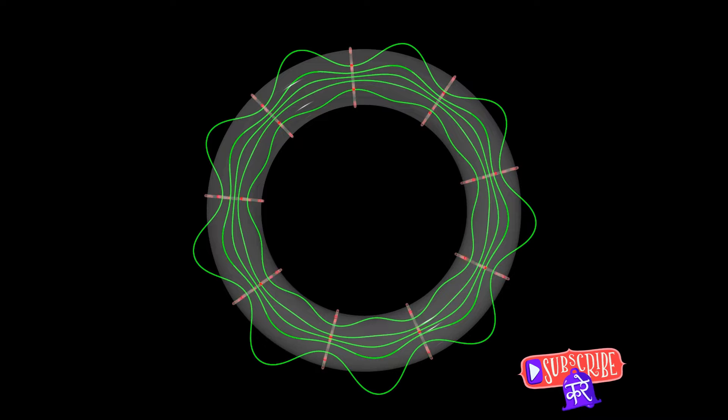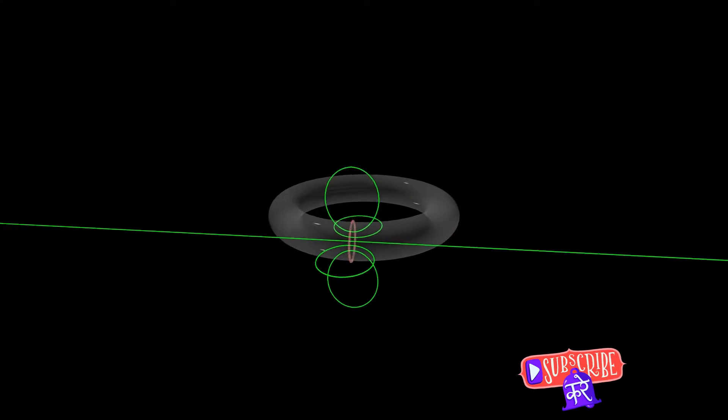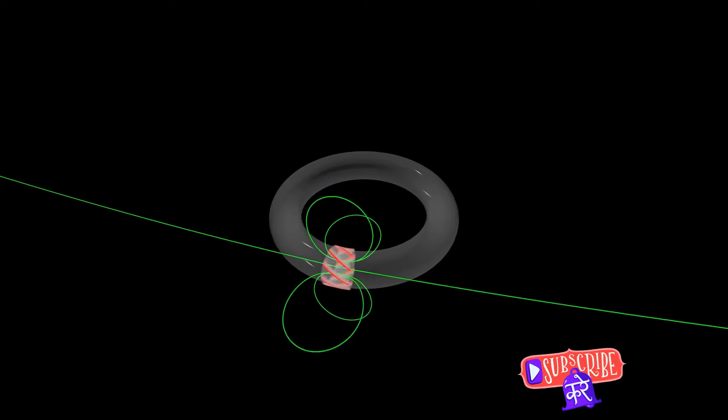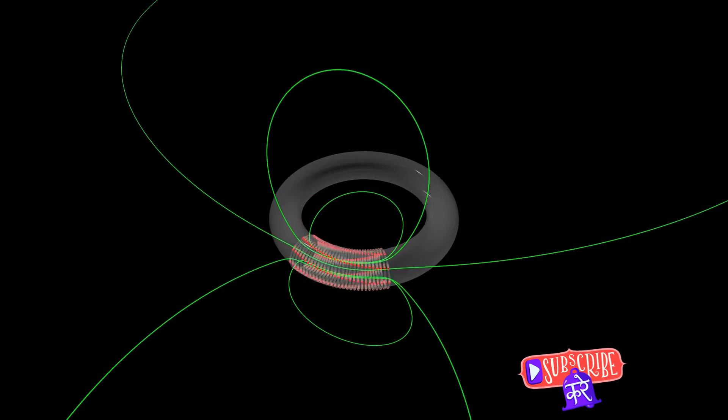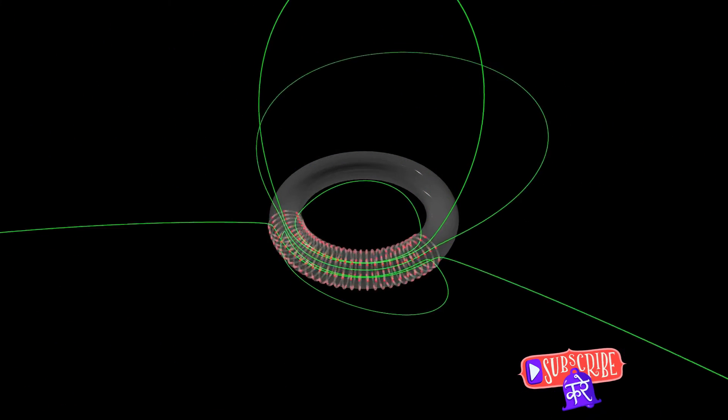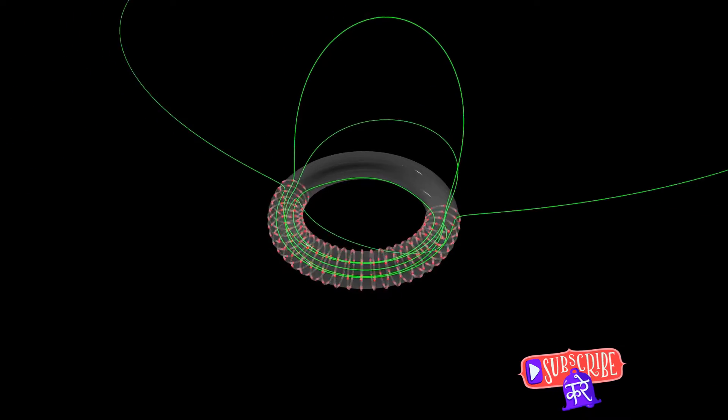Before we understand how a toroidal transformer works, it's crucial to understand its structure. A toroidal transformer, as the name suggests, is shaped like a torus, a fancy term for a donut. This circular shape is more than just aesthetically pleasing. It's a key aspect of the transformer's function.